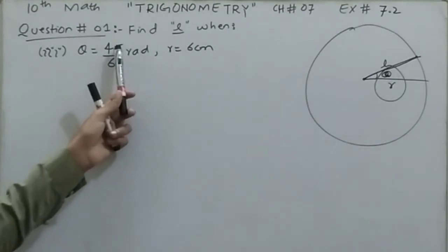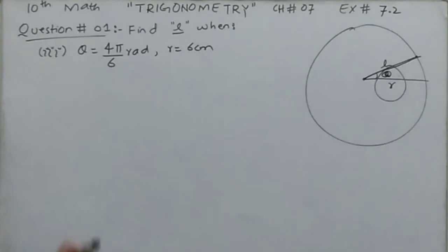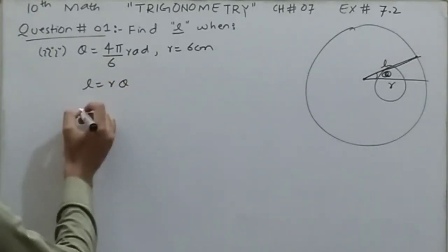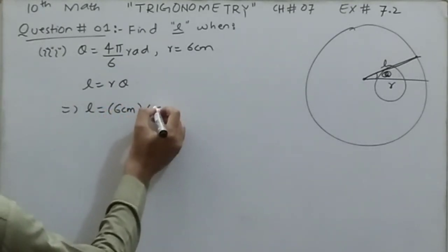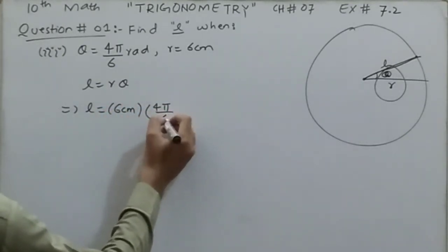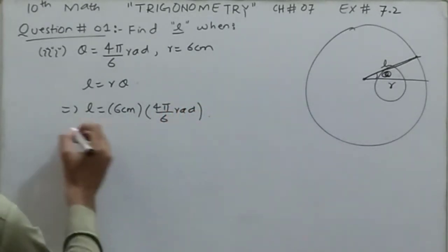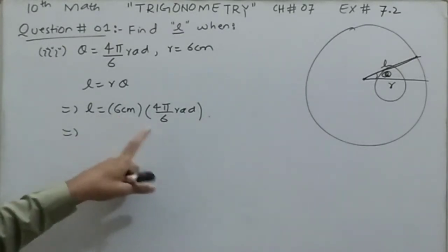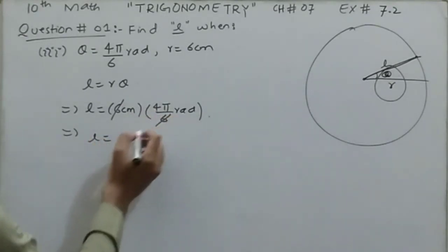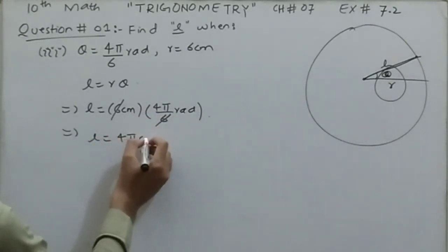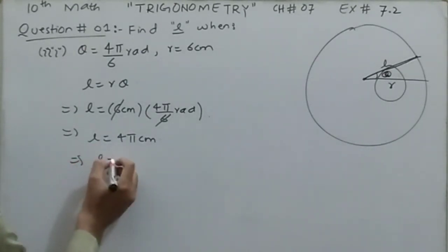Now move to part three: theta is equal to 4π/6 radian and the radius r is equal to 6 centimeters. Again using the formula l = r·θ: l = 6 centimeters × 4π/6 radian. Since theta is already given in radians, no conversion is needed. The 6 in the numerator and the 6 in the denominator cancel each other, and we are left with l = 4π centimeters.